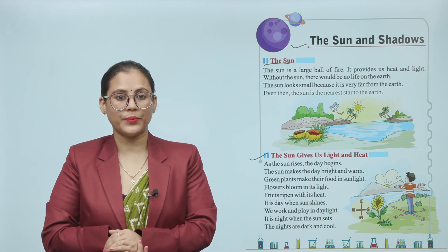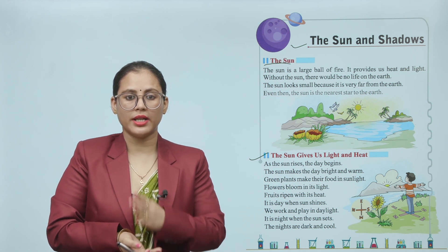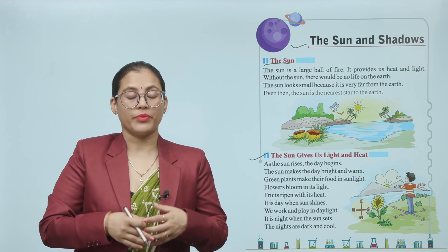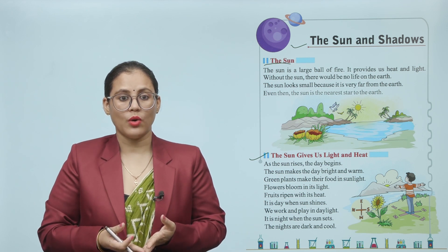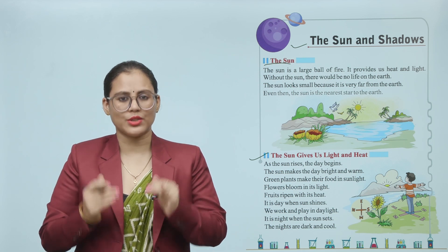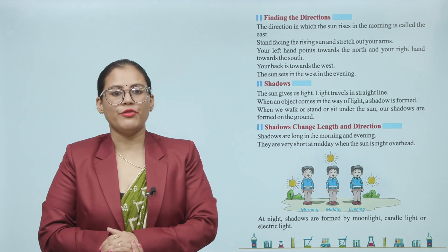It is night when the Sun sets. The nights are dark and cool. The Sun makes the day bright and warm. Green plants make their food in sunlight. Flowers bloom in sunlight. Fruits ripen with the Sun's heat. We play and work in daylight, and when sunset happens, night comes.